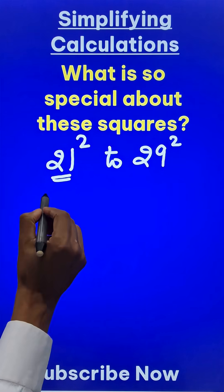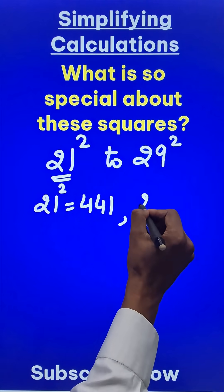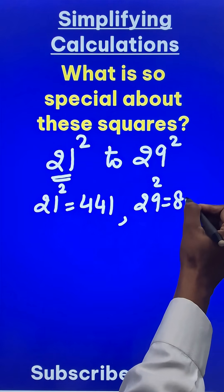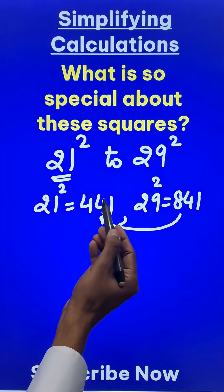If you see the first number here, 21 square is 441, and the last number, 29 square, is 841. Can you observe something? There is an exact difference of 400.